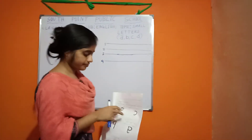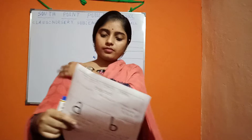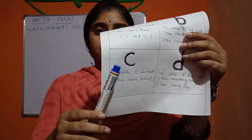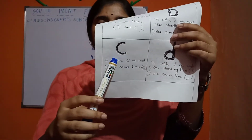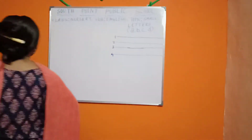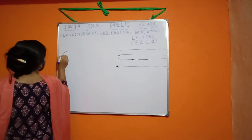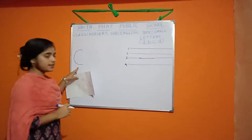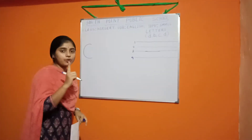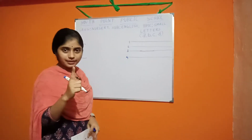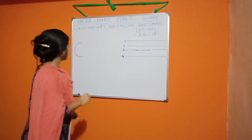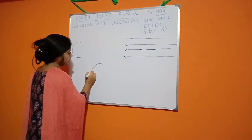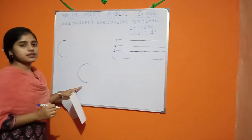Next, C. This is C. To write C, we need only one curved line. To write C, we need only one curved line. This is C.